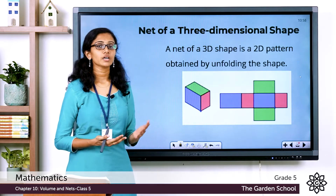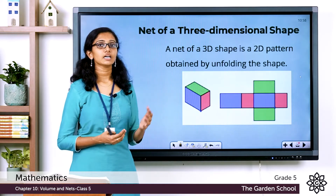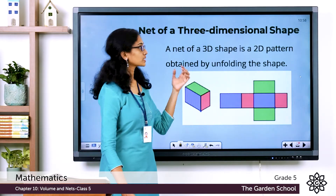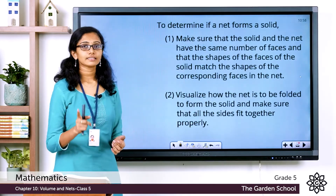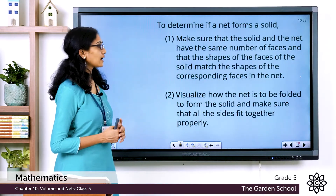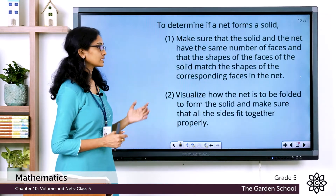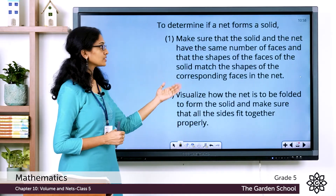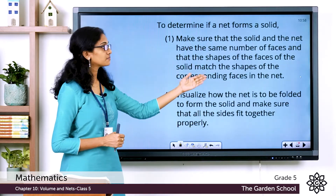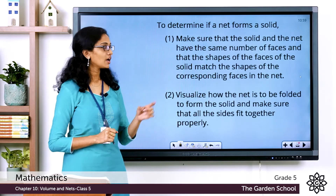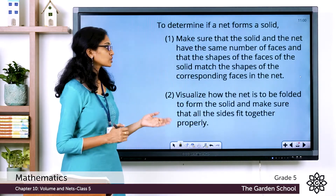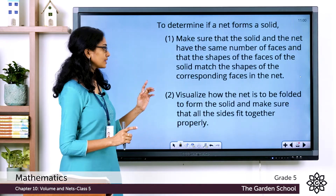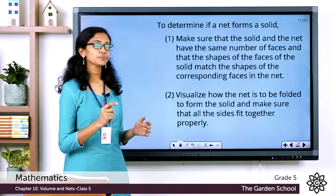So how do we find out if a given net is the net of a solid? To determine if a net forms a solid, make sure that the solid and the net have the same number of faces, and that the shapes of the faces of the solid match the shapes of the corresponding faces in the net. Then visualize how the net is to be folded to form the solid and make sure that all the sides fit together properly.